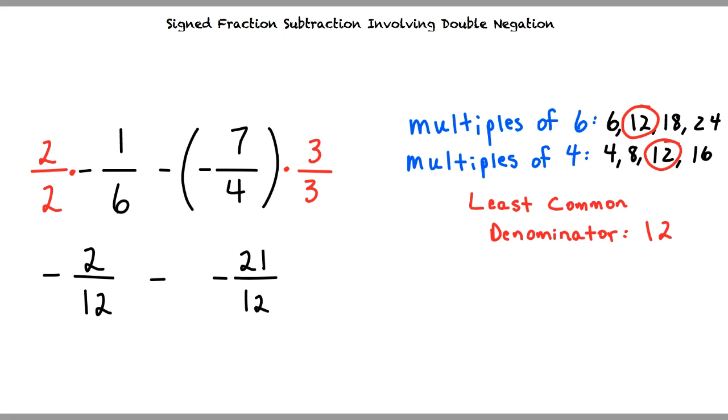Anytime we are multiplying or dividing a negative by a negative or subtracting a negative, the negatives cancel and we are left with a positive. Given this information, is there any spot where we can cancel some negative signs? In the second half of our expression, we are subtracting negative 21 over 12. Could we cancel here?